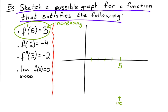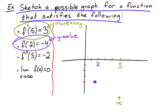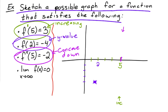The next condition says f(2) = -4. This is a y-value, so when x equals two, y equals negative four — my graph has to pass through the point (2, -4). Then f''(5) = -2: the second derivative at x = 5 is negative two, which means the function has to be concave down at that point.